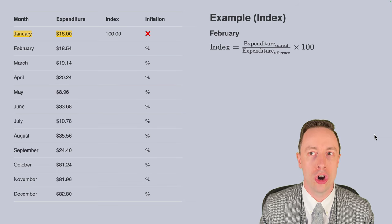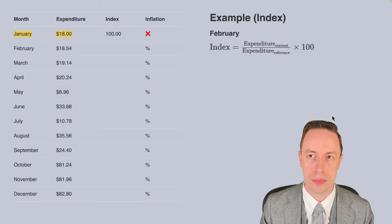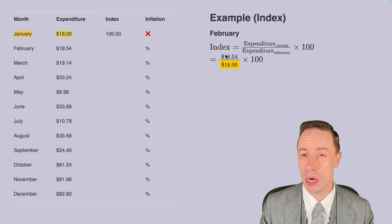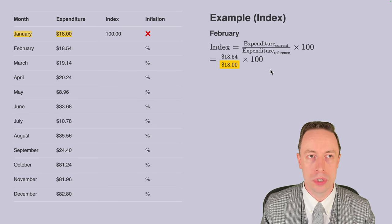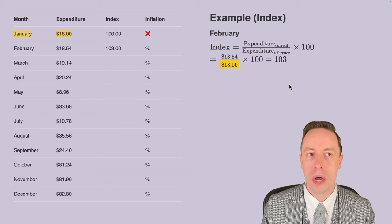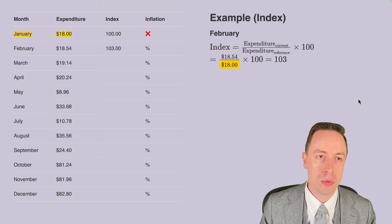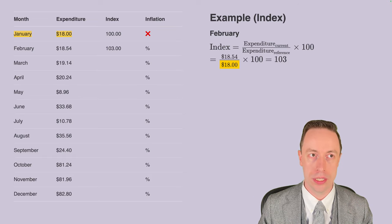Let's do this again for March, spending $19.14 on apples, bananas, and citrus. Caution: we always divide by the reference period, not the previous period — everything is relative to the reference period. So $19.14 divided by $18, times 100, gives just over 106. This converts an unwieldy expenditure into a nice easy-to-understand three-digit number centered around 100. In a month where the citrus price tanks below the reference period, the index drops below 100 — that simply means the bundle has a lower price tag than during the reference period.